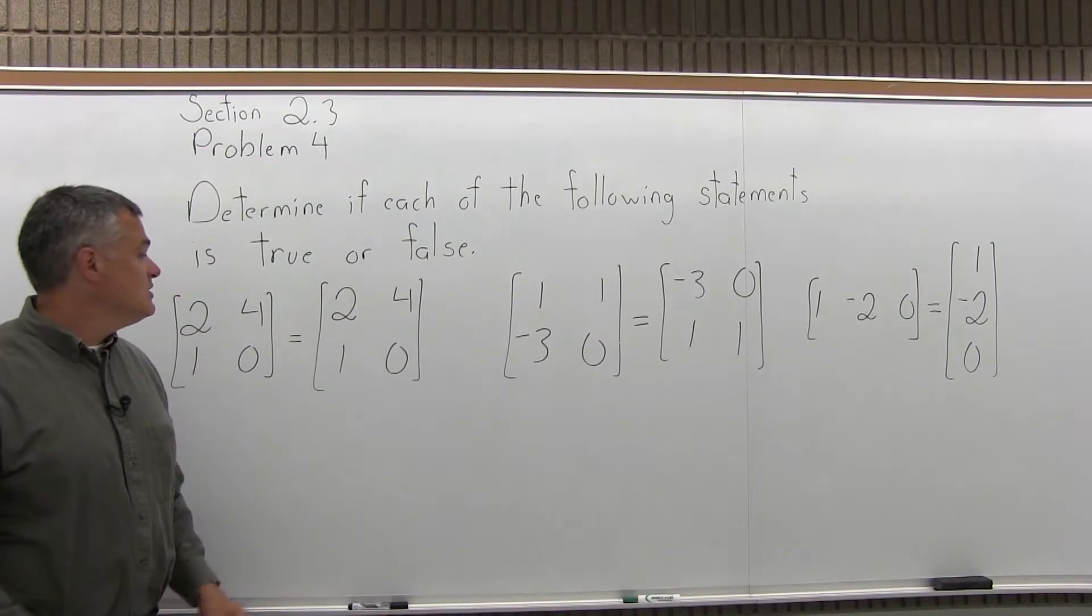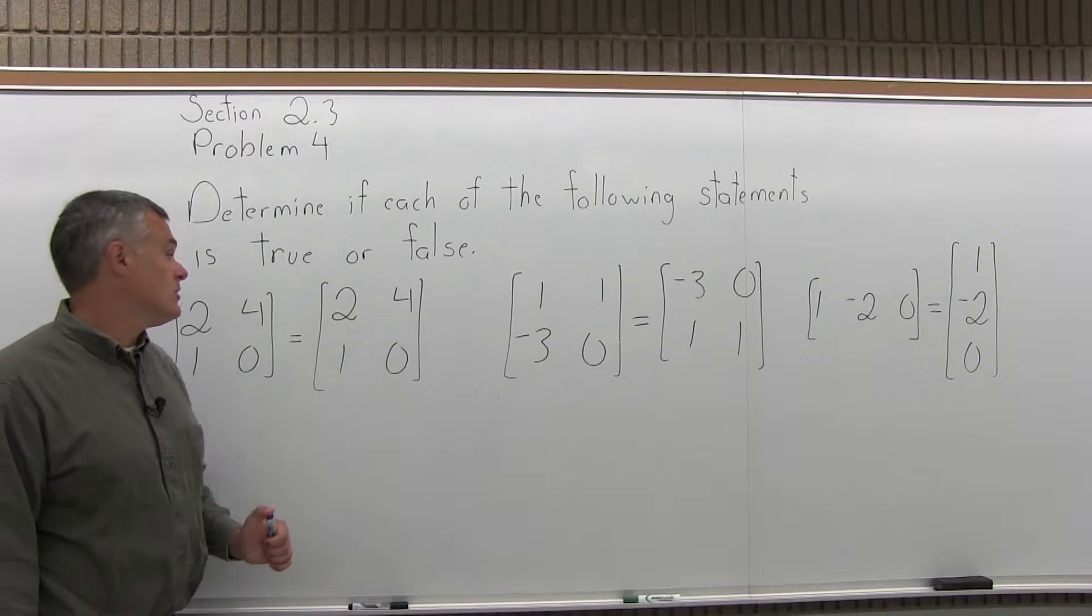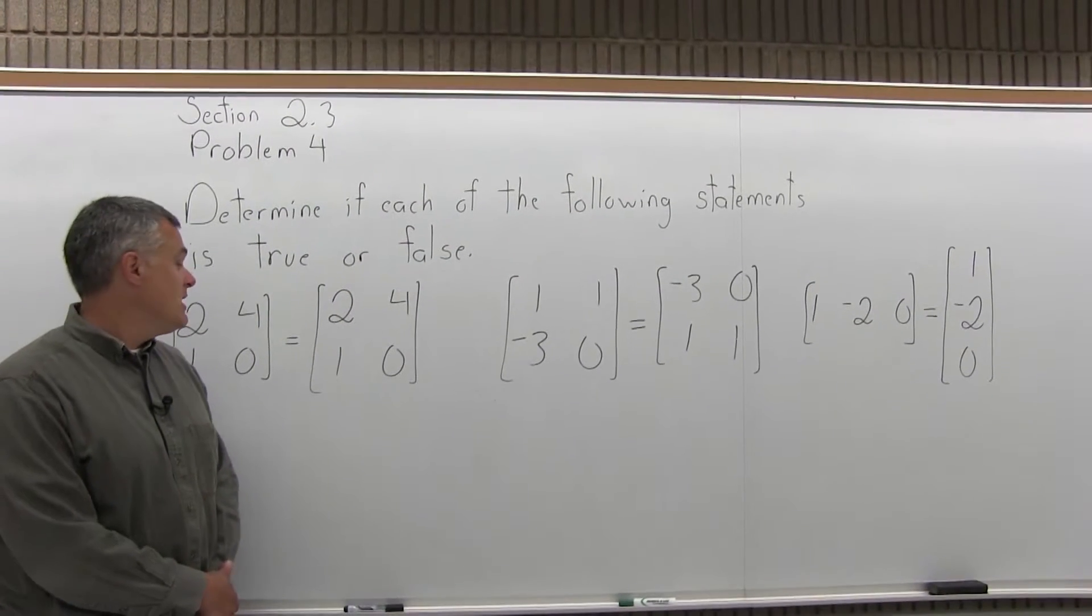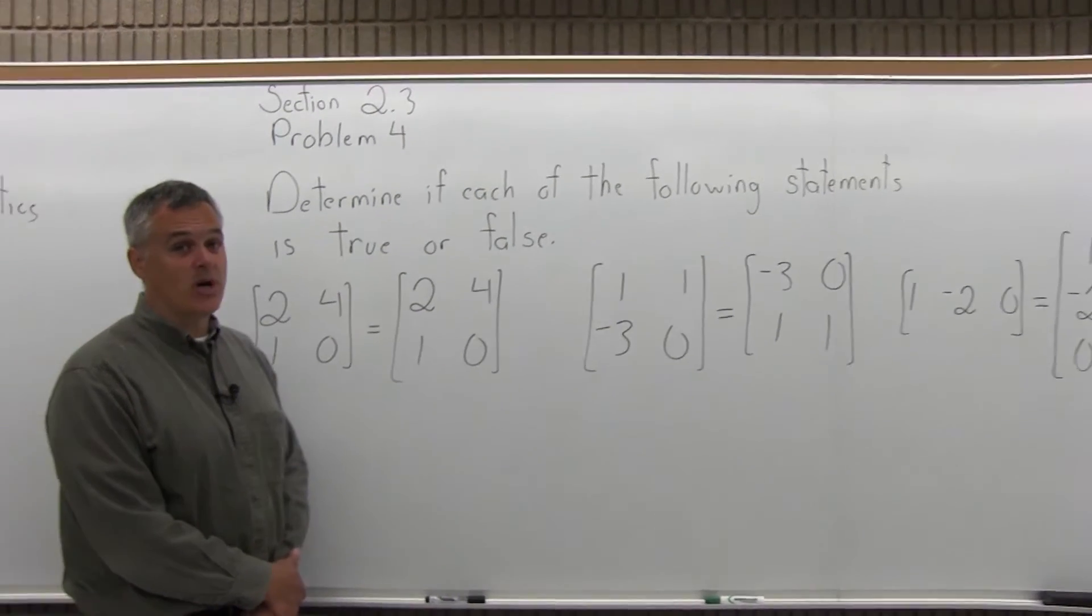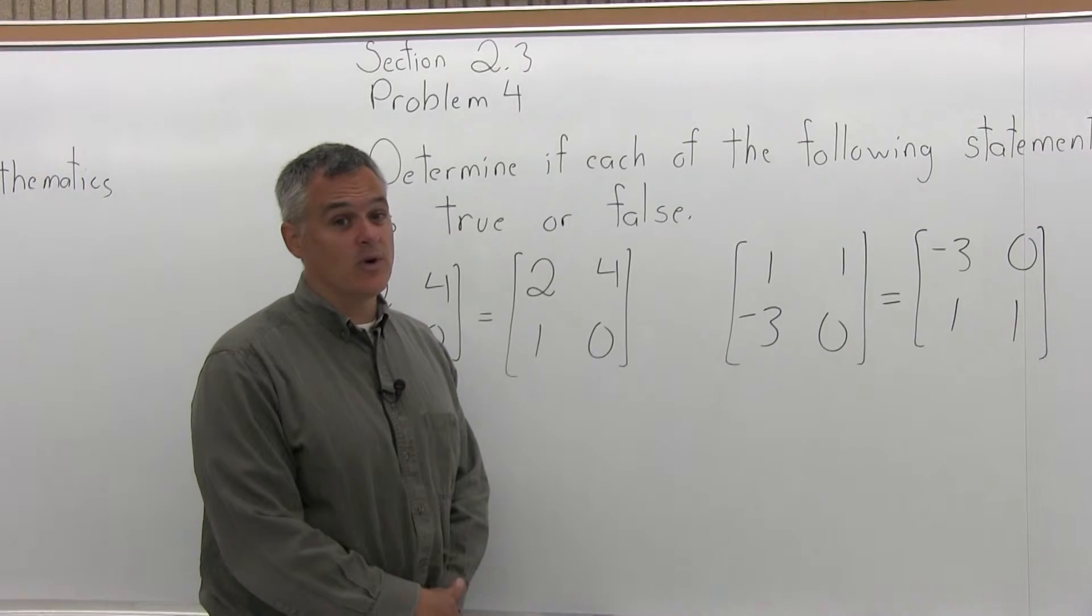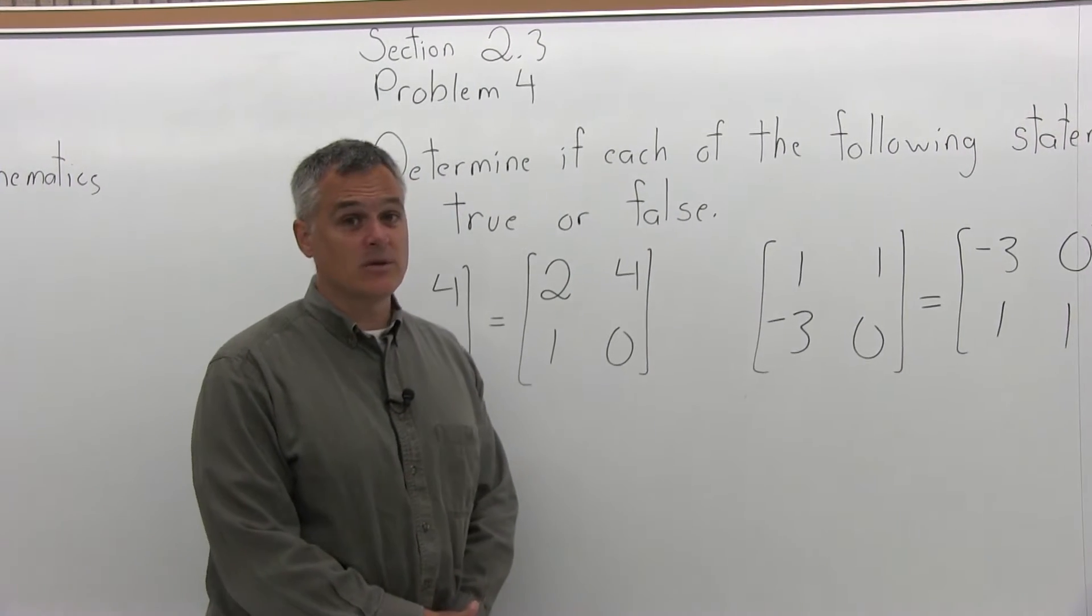The first one says that these two matrices are equal. The first matrix is [2, 4] across the top row and [1, 0] across the bottom row. It asks if it's equal to the same exact matrix: [2, 4] across the top row and [1, 0] across the bottom row.